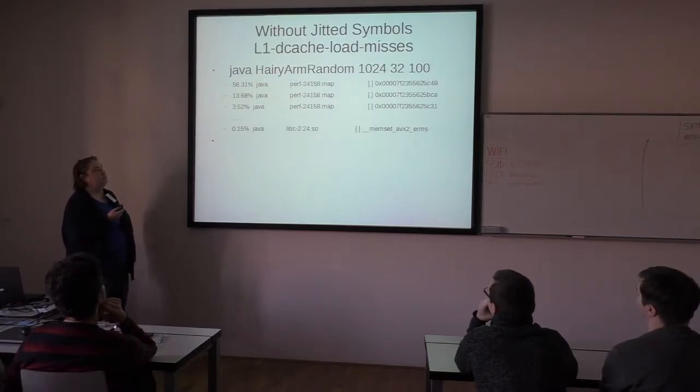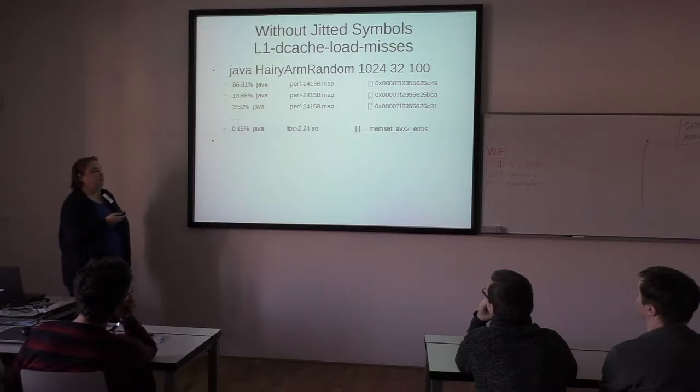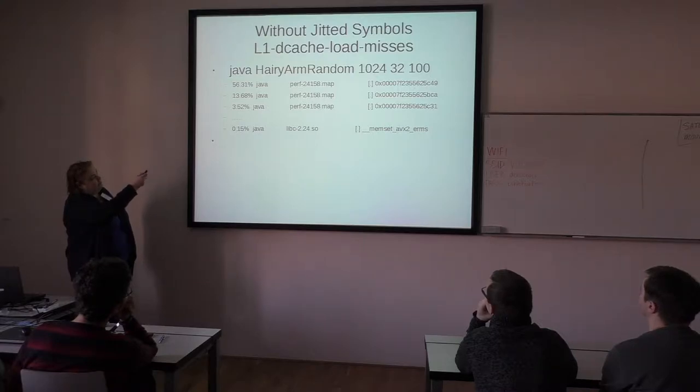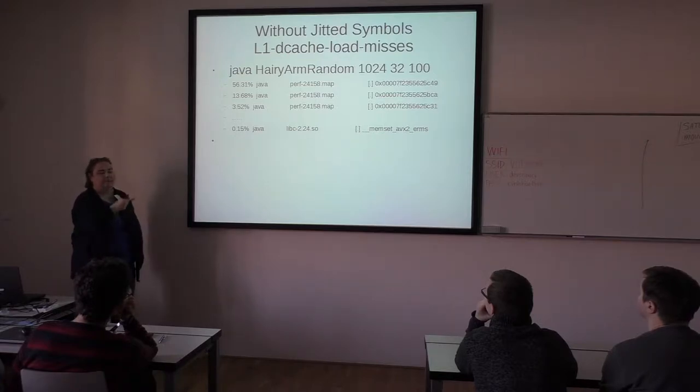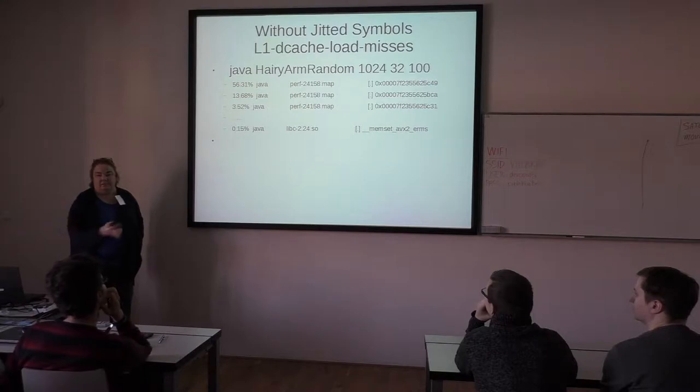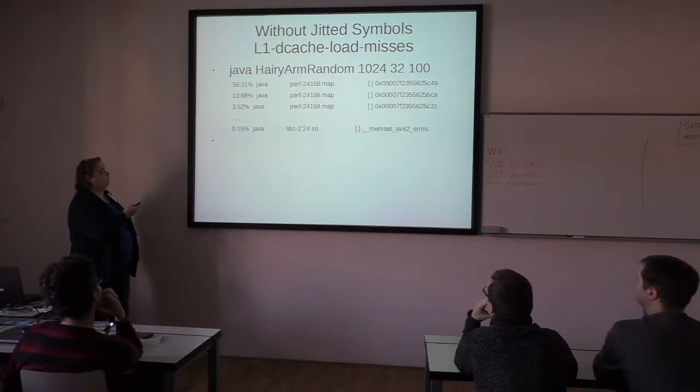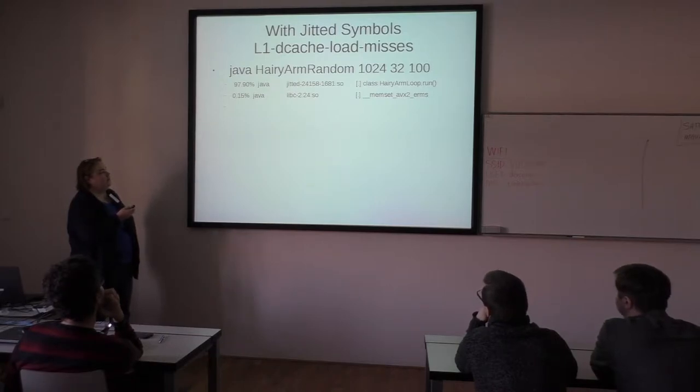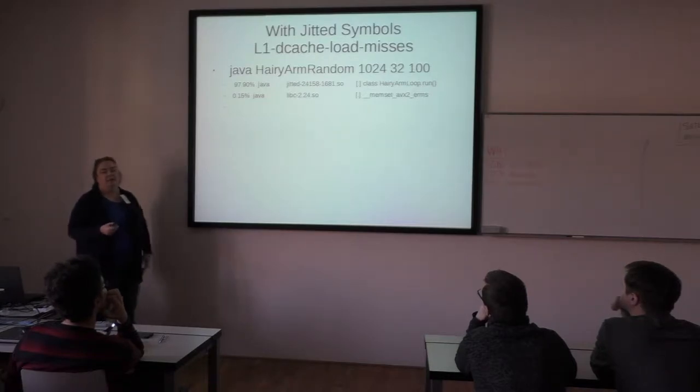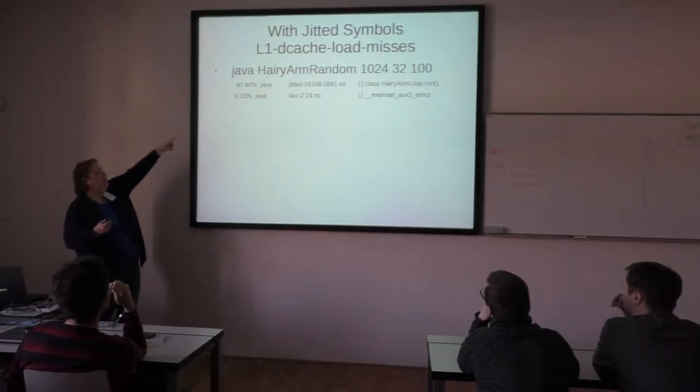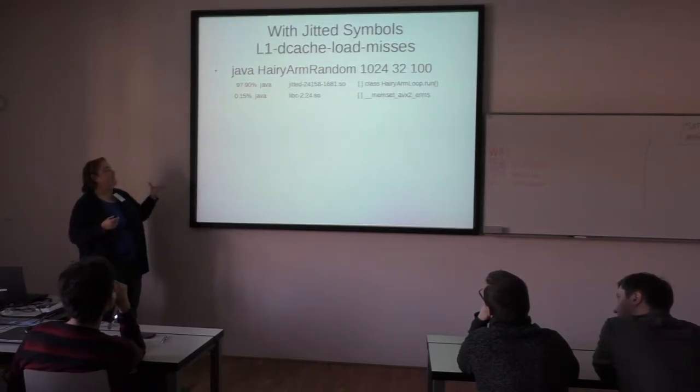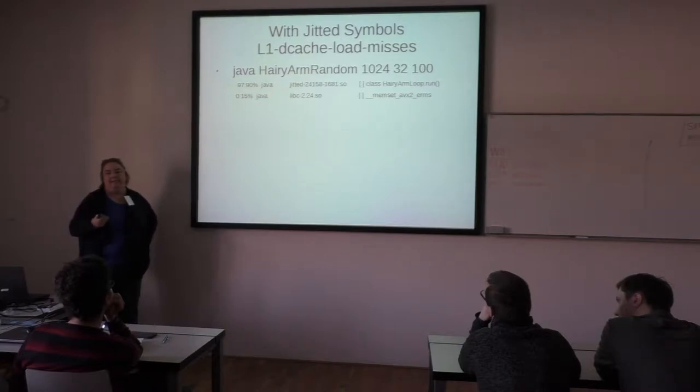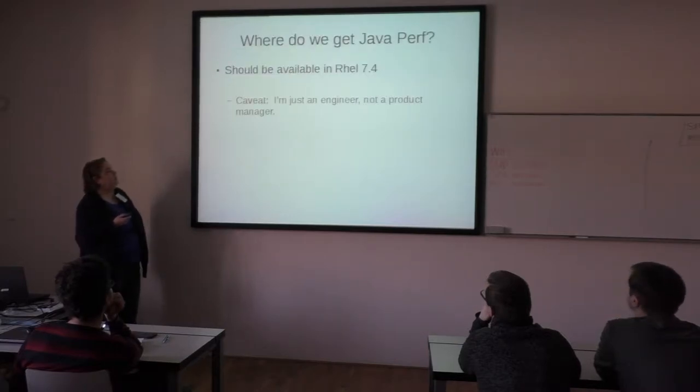So again, if you don't have the jitted symbols and you run it, you get something that looks like this. And this is doubly heinous because you can see those addresses are pretty close together. They're actually, one of those I believe is the interpreted method and one of them is the compiled method. But it doesn't know, right? The perf tool doesn't know that they're the same thing. So once that I added the perf tool, you can see that it conglomerates those together. It recognizes that they're both in my hairy arm loop. And you can see that when I ran this, I got 97.9% of my cache misses were writing to this array, which is what we expected.